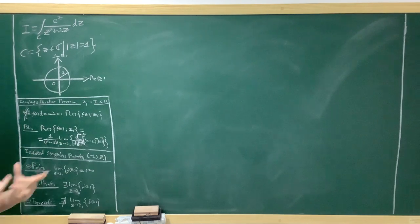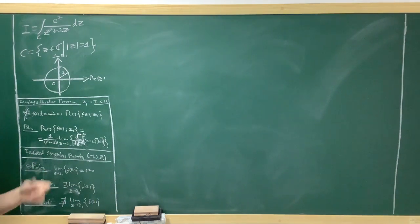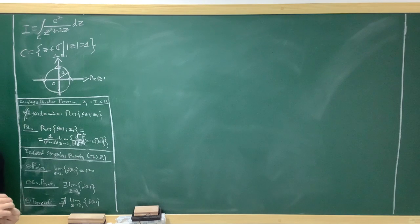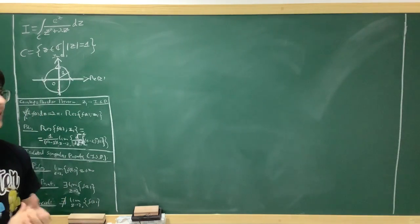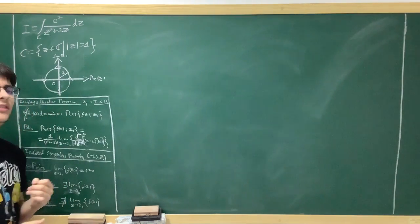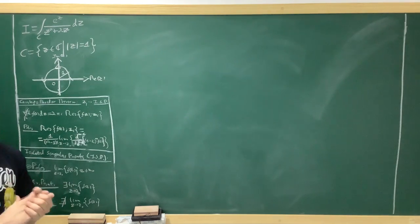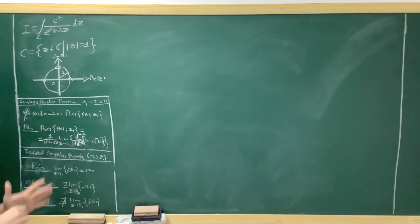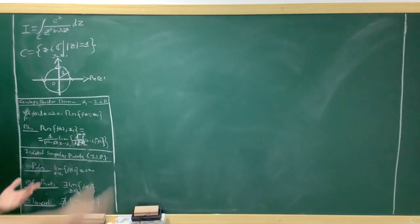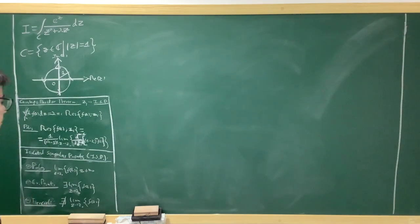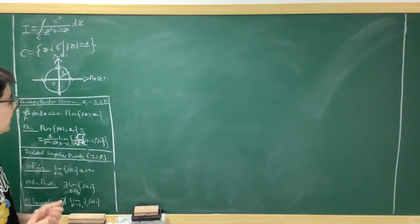An obvious question is what orientation we use — we're going to choose the counterclockwise, positively oriented curve. We could use a parametrization since it's not too hard, but the integral you end up with is not easy to do. I've checked and I don't think it has an antiderivative. So instead, in complex analysis we use the wonderful Cauchy's residue theorem, and that's what we're going to be doing today.